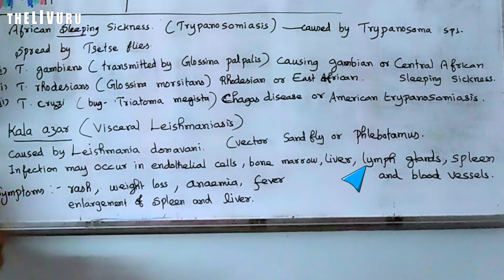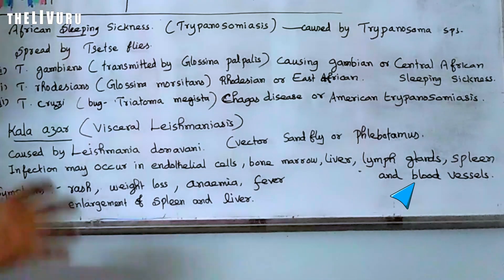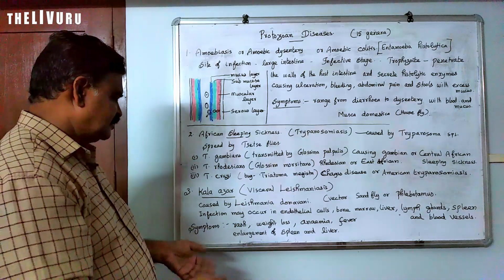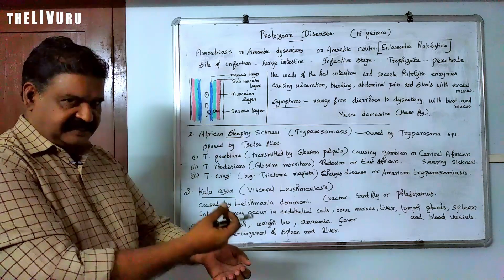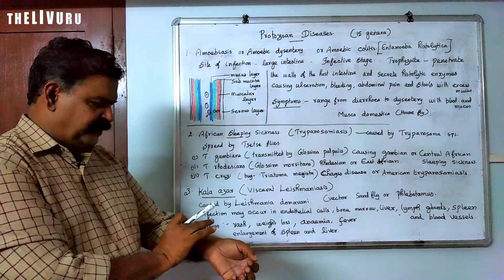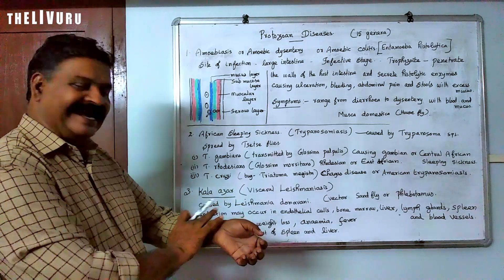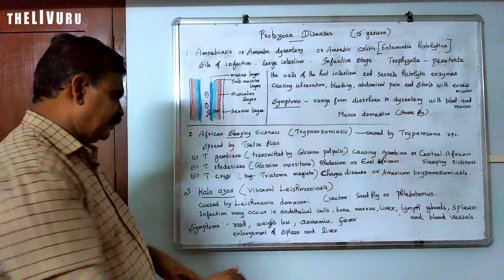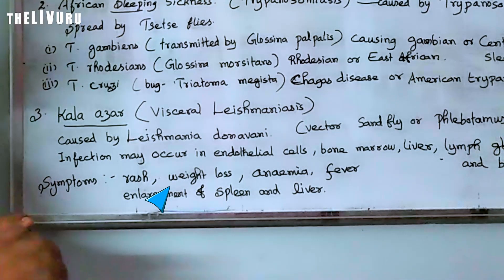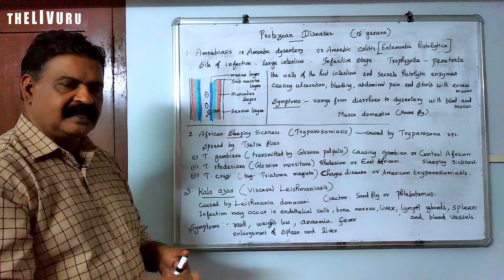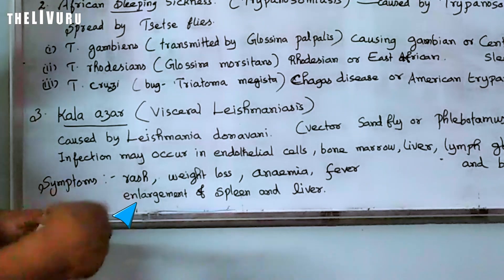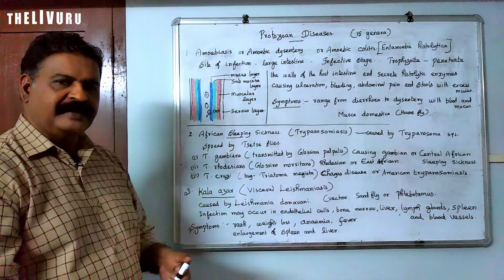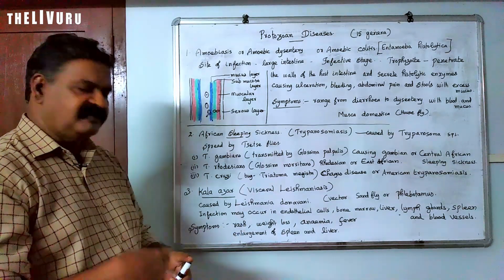Leishmania donovani affects the endothelial cells, bone marrow, liver, lymph glands, spleen, and blood vessels. The disease is transmitted by the sandfly. Symptoms include rashes, weight loss, anemia, and fever. There is also enlargement of the spleen and liver, known as splenomegaly and hepatomegaly respectively. Hepatomegaly is inflammation of the liver and splenomegaly is inflammation of the spleen.